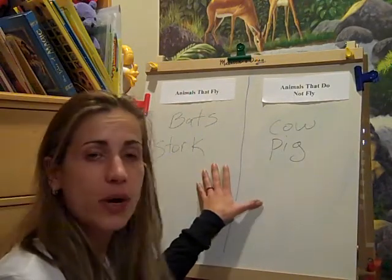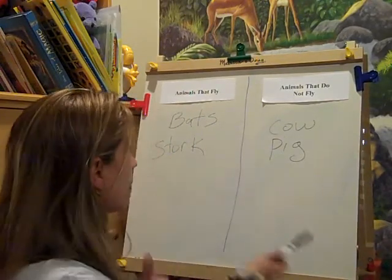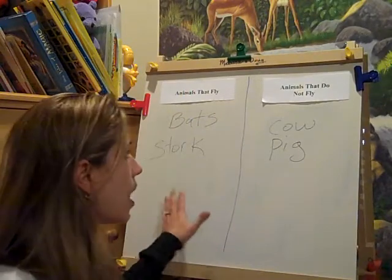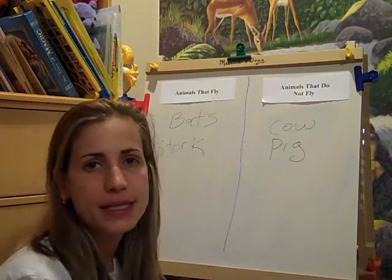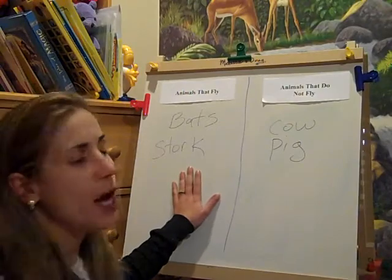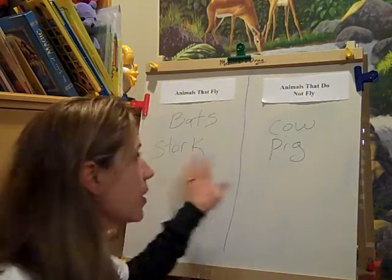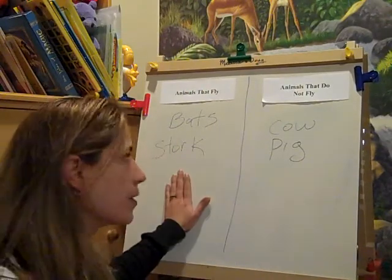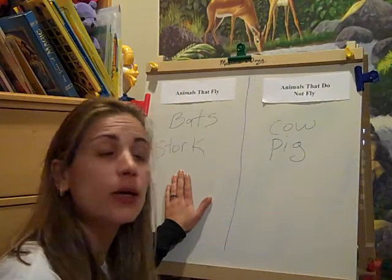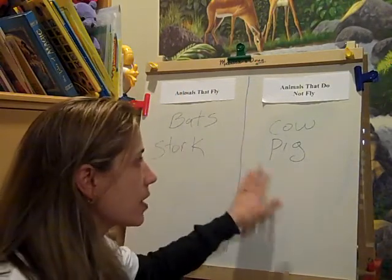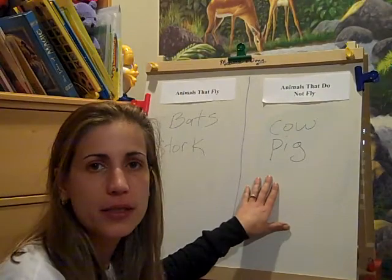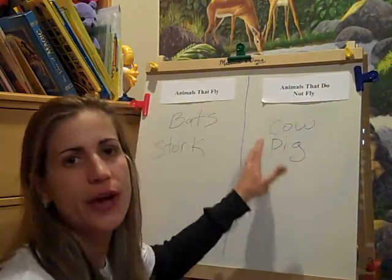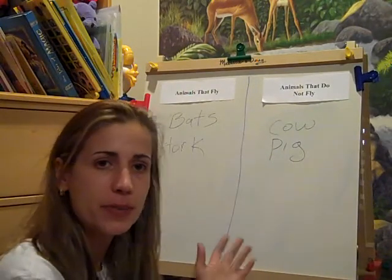I would also explain that these are two different categories, and that's classification. I can move on with the lesson by asking, 'Animals that fly — what makes them fly? What do these animals have that these don't?' Hopefully somebody would come up with wings, and I could say, 'These animals have wings.' Then I would ask, 'How come these animals can't fly, other than the fact that they don't have wings?' Hopefully I would get the answers that these animals are bigger, larger, heavier, and we can go into the classification of those types of animals.